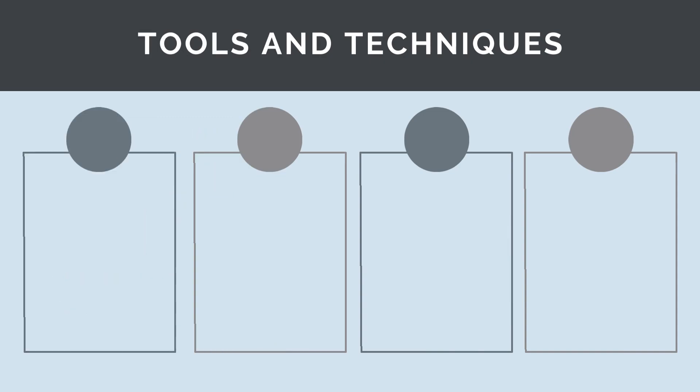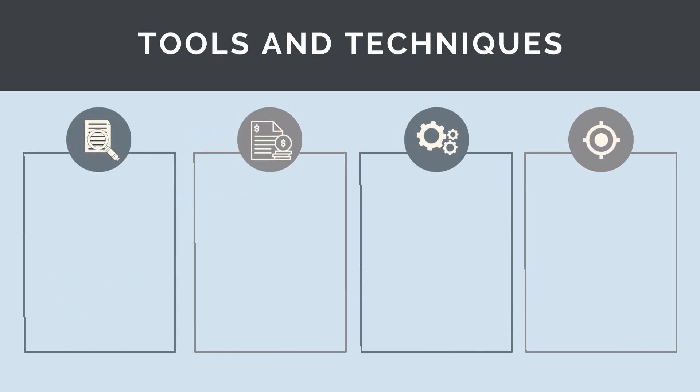Some of the key tools and techniques used in cost estimating and management are quantity takeoffs, where we determine accurate quantum of work and tasks from the design drawings, and estimating, which is calculating the total cost of a construction activity.